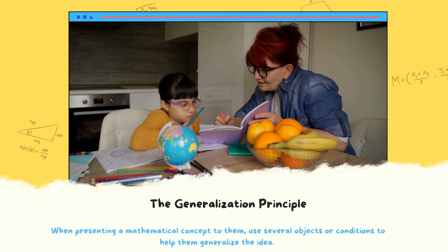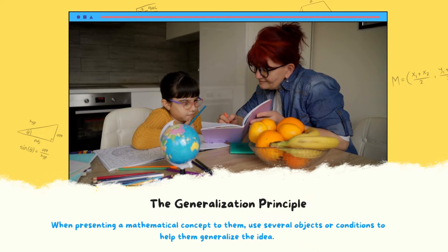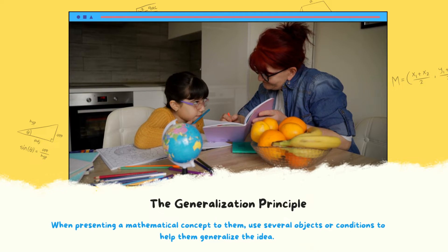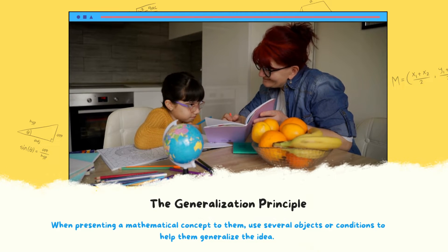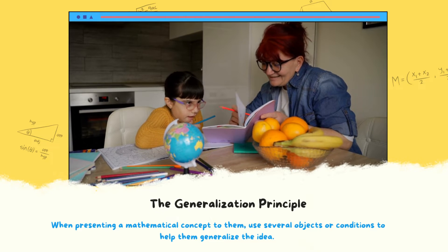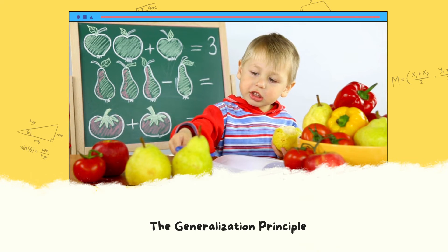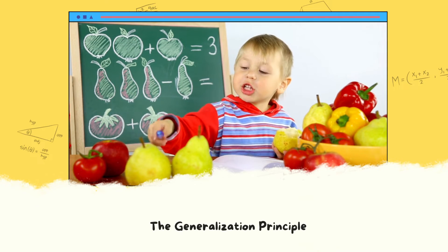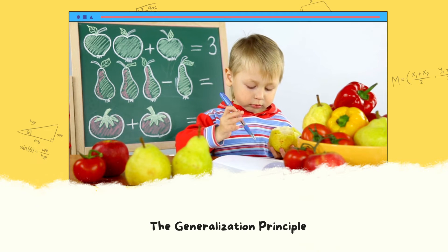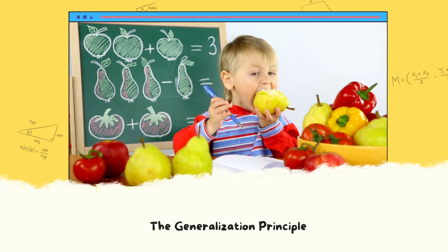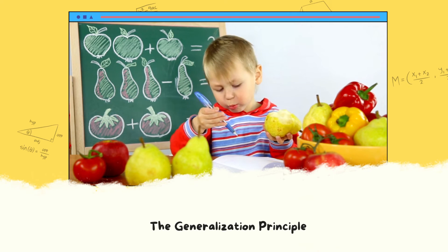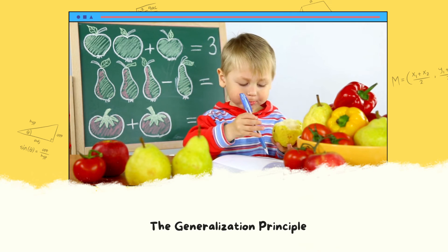The Generalization Principle: Children with autism have difficulty when it comes to generalization skills. They struggle in applying a general mathematical concept when the condition changes. For example, they know that 3 plus 2 apples are 5 apples, but when you change the object — like 3 plus 2 bags are 5 bags — they may be confused. When presenting a mathematical concept, use several objects or conditions to help them generalize the idea.